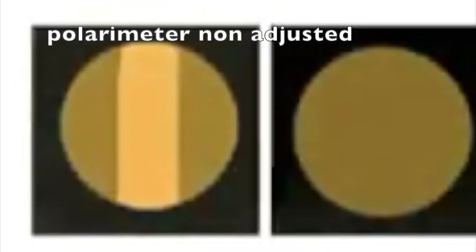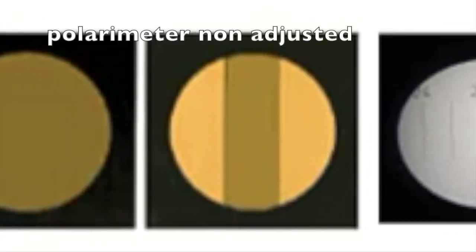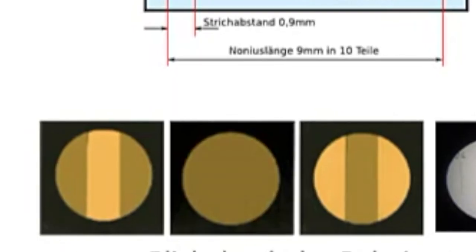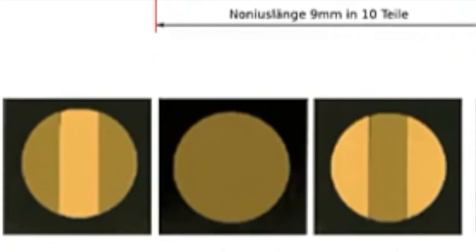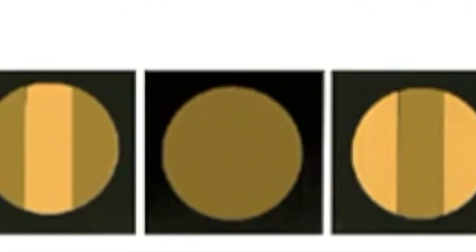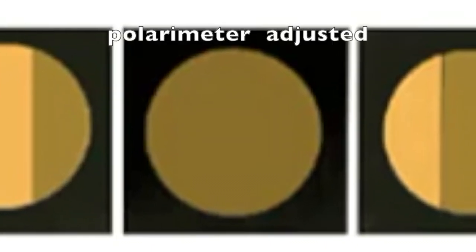A view through the eyepiece of the polarimeter usually shows one or two black bars in the non-adjusted state. To adjust, rotate the dial of the polarimeter until the bars disappear and only a uniform gray circle remains.